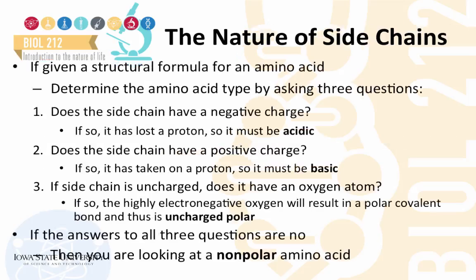When determining the type of amino acid from its structural formula, you can ask three questions. First, does the side chain have a negative charge? If so, it has lost a proton and must be acidic. Second, does the side chain have a positive charge? If that's the case, it has taken on a proton and must be basic.